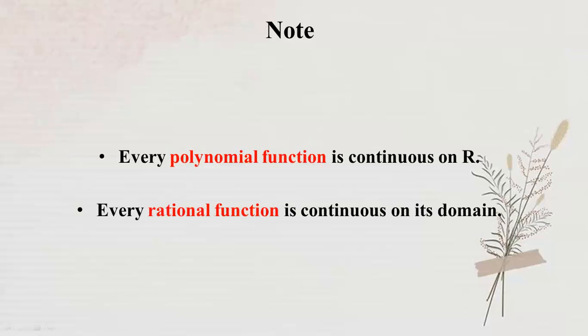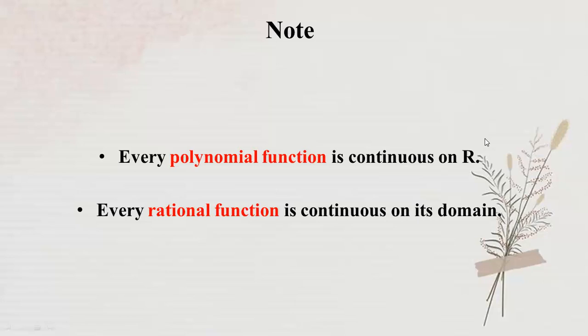Every polynomial function is continuous on our real numbers. Number two: every rational function is continuous on its domain. Rational function is continuous on its domain.